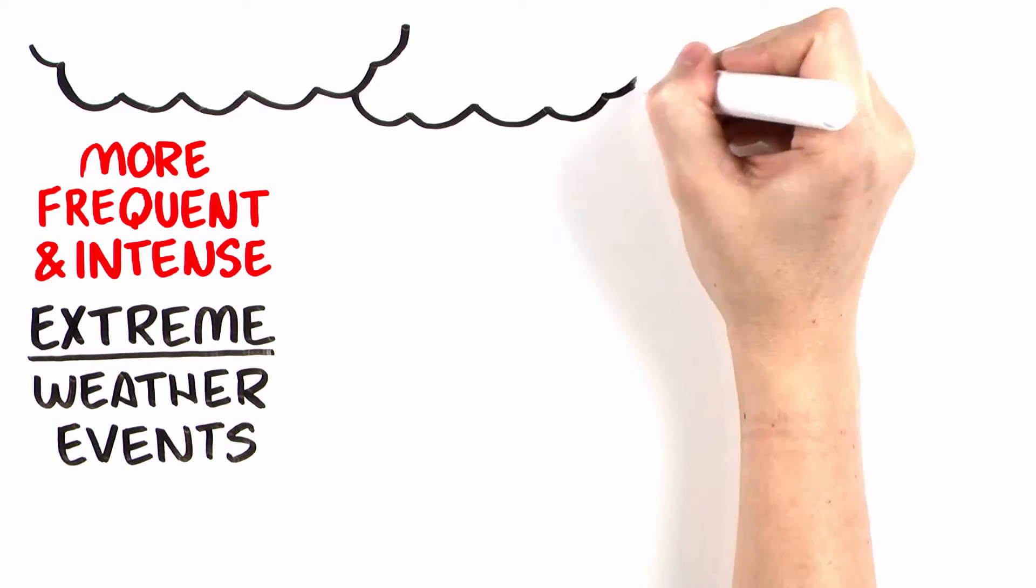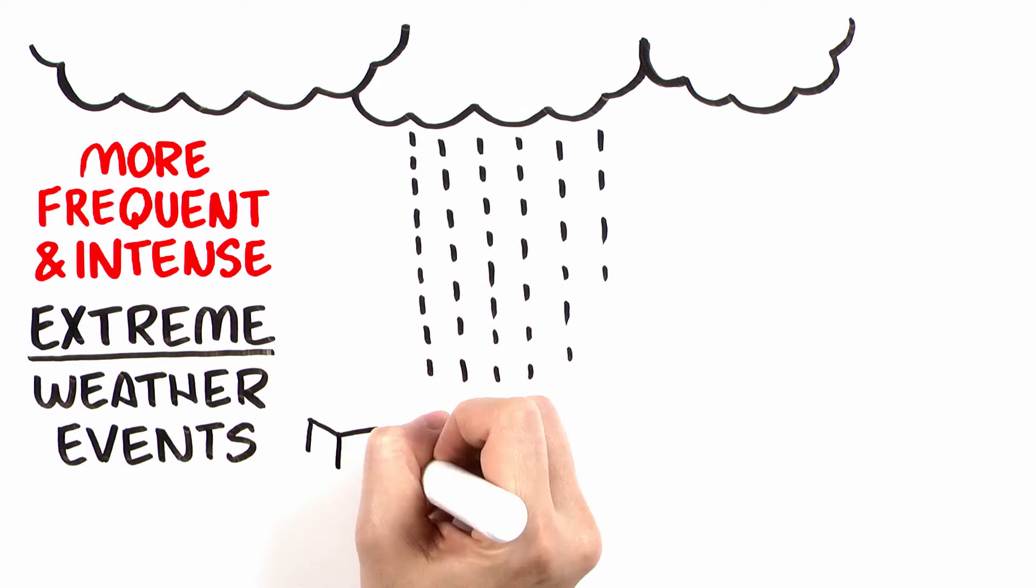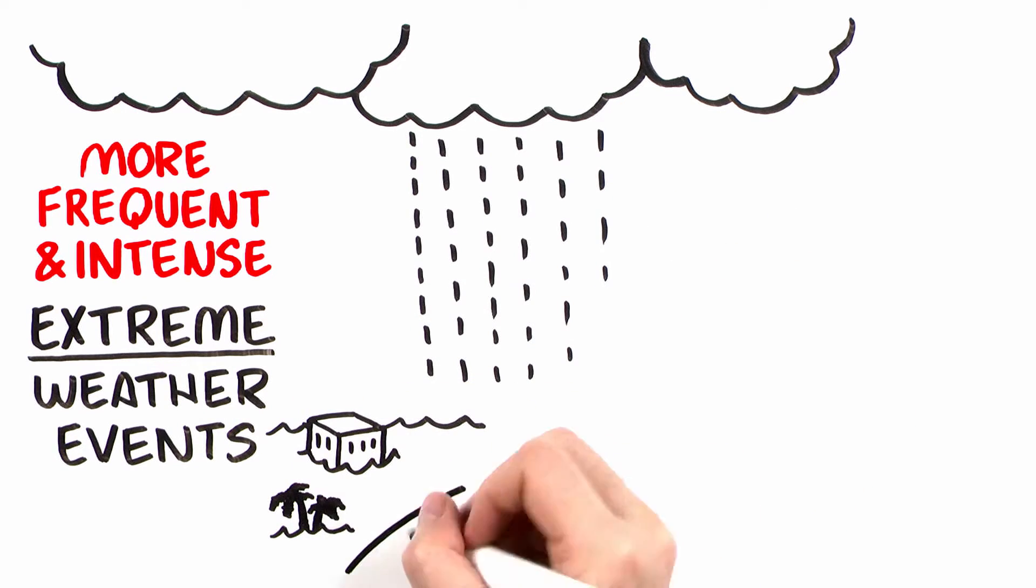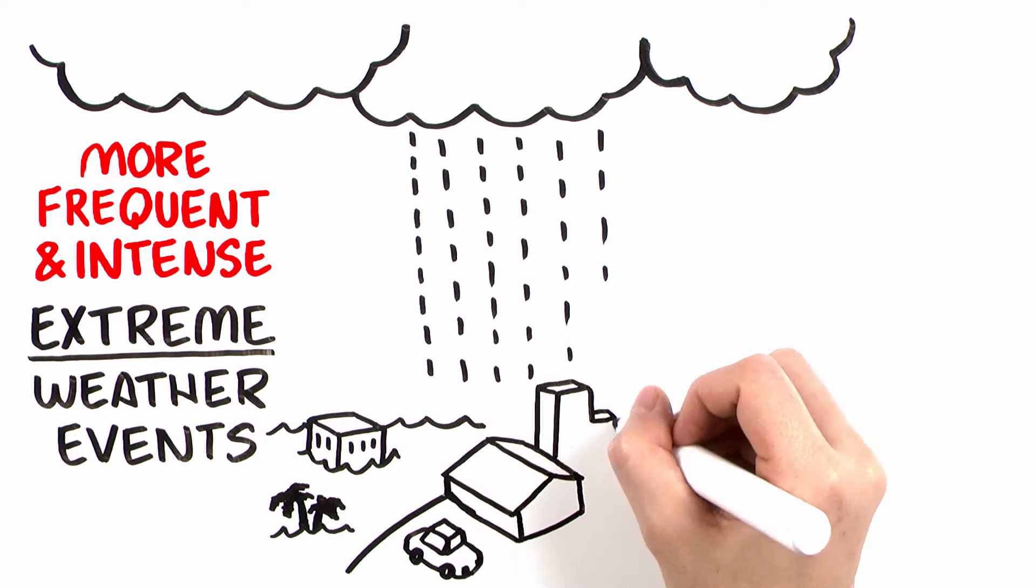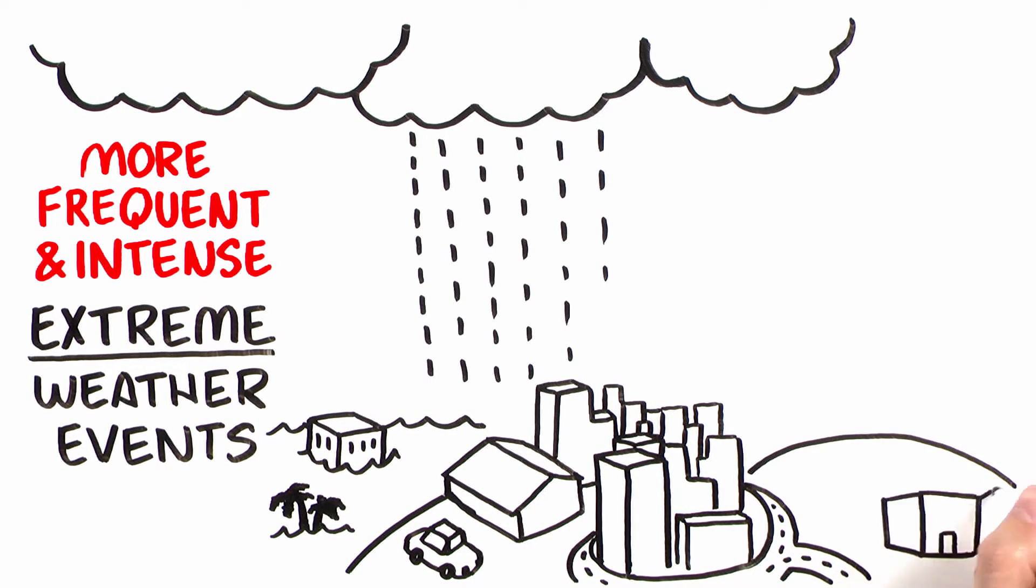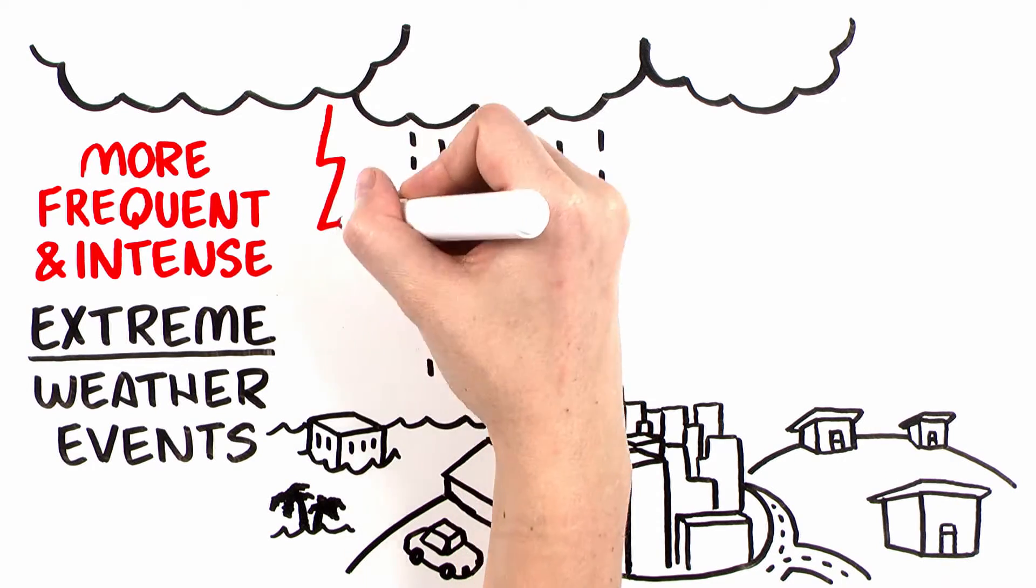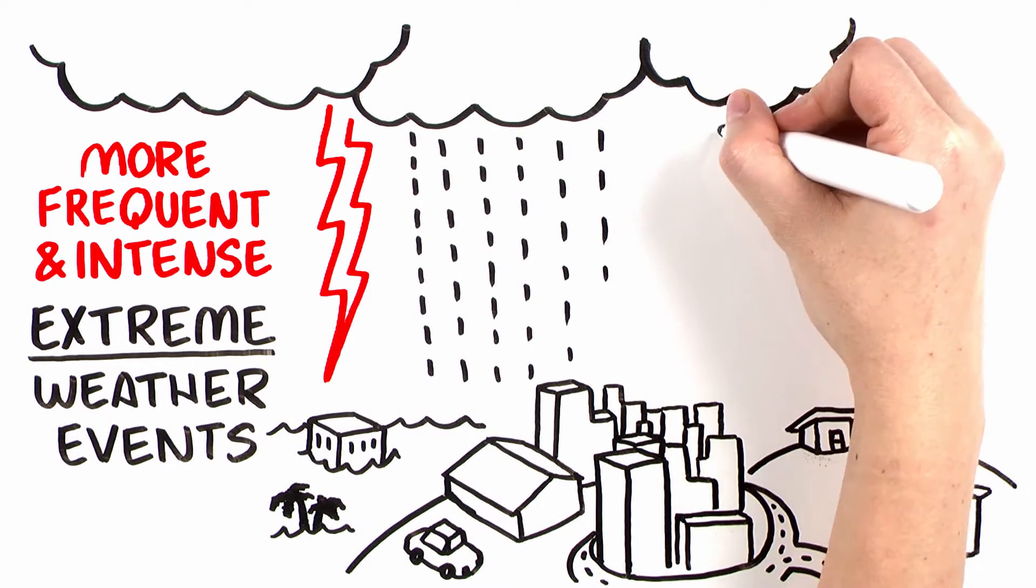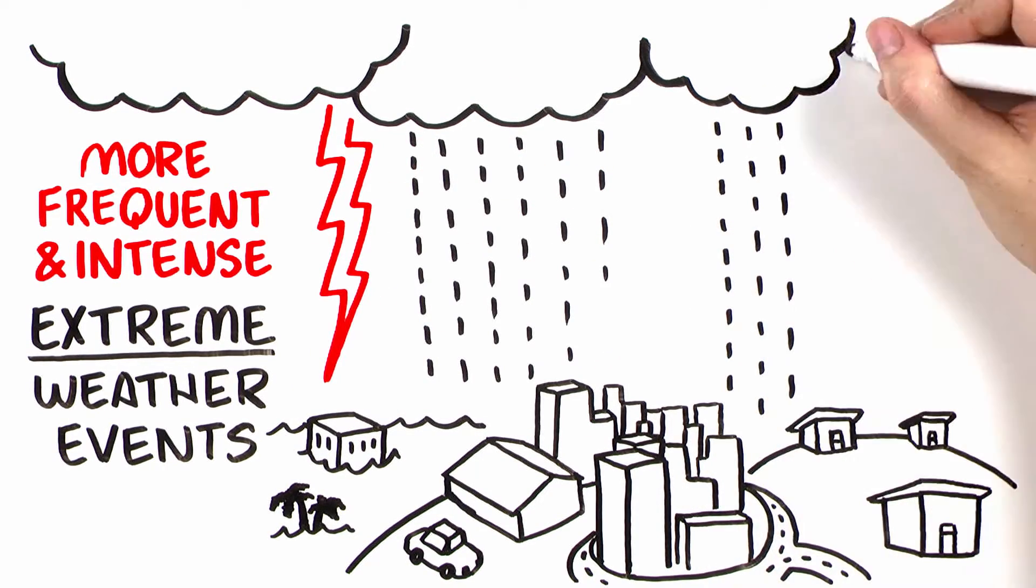At the same time, exposure to climate-related hazards is increasing as more people and more assets are located in coastal areas, floodplains, heavily populated cities, and informal settlements—all places particularly affected by weather extremes like floods and intense heat.